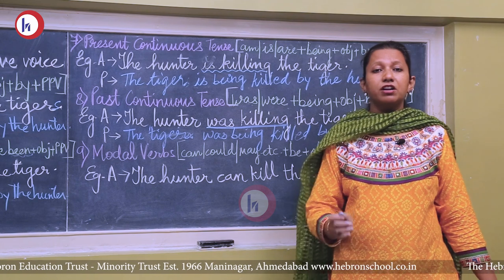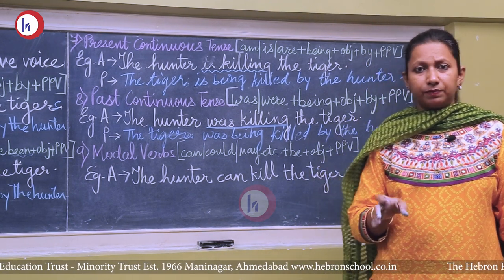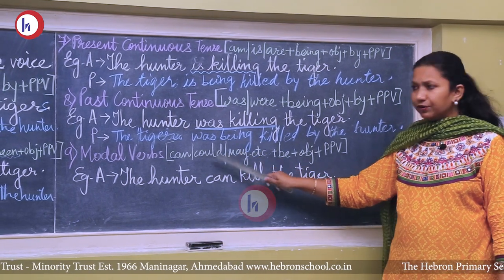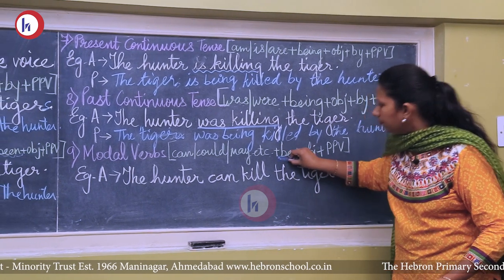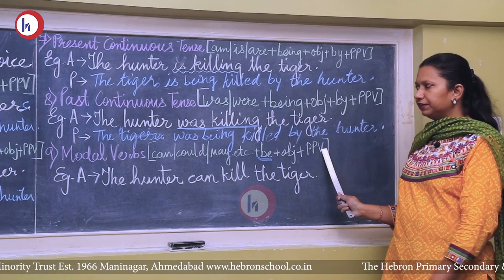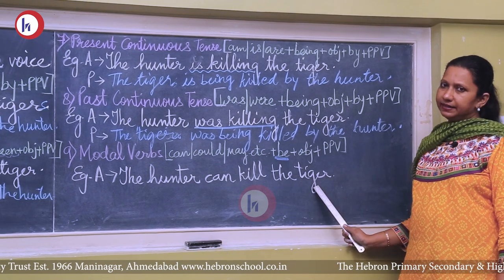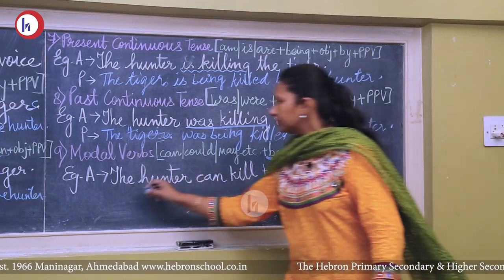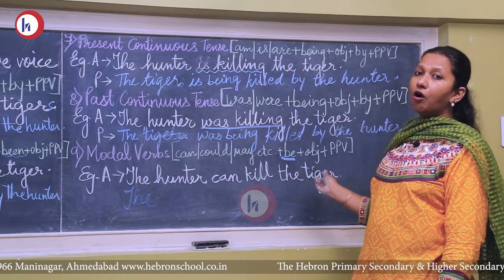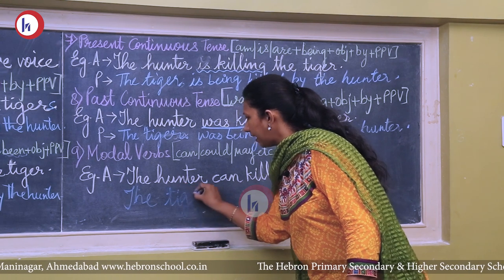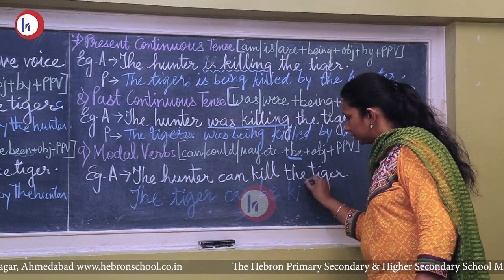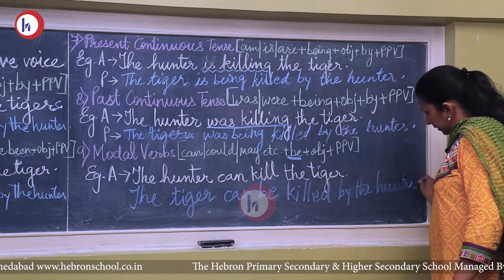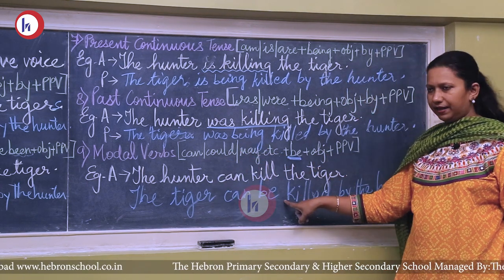Modal verbs such as can, could, may, and might are helping verbs used before verbs to give more meaning. The formula is: modal verb + be + past participle + by. Example: 'The hunter can kill the tiger.' The passive voice becomes: 'The tiger can be killed by the hunter.' Similarly, 'could' changes to 'could be', and 'may' changes to 'may be'.